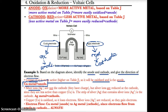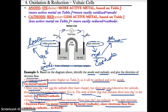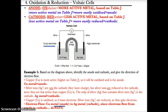Ag is less active than Cu, so it's more easily reduced. Based on red cat, Ag is the side of the cathode. Since Cu is oxidized, it loses electrons — that's where electrons start. Since Ag is reduced, it gains electrons — that's where electrons end up. Electrons flow from the Cu anode to the Ag cathode.